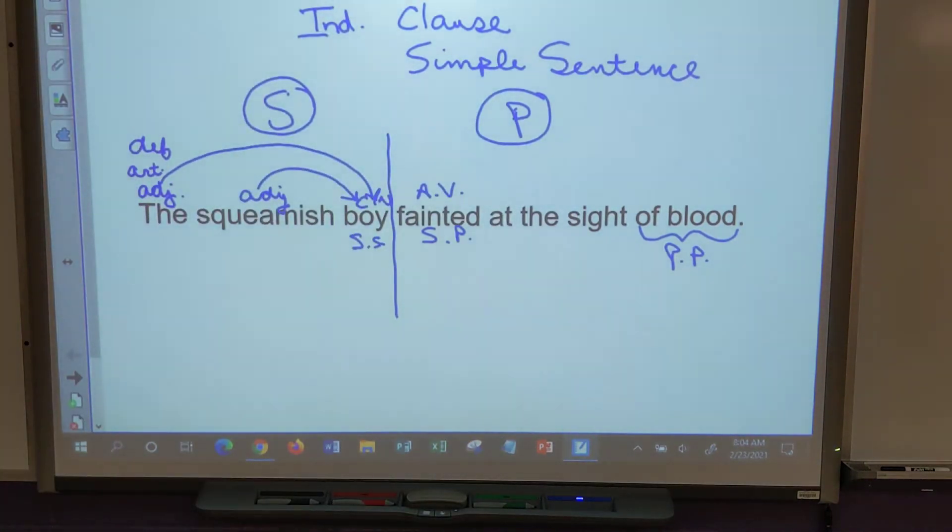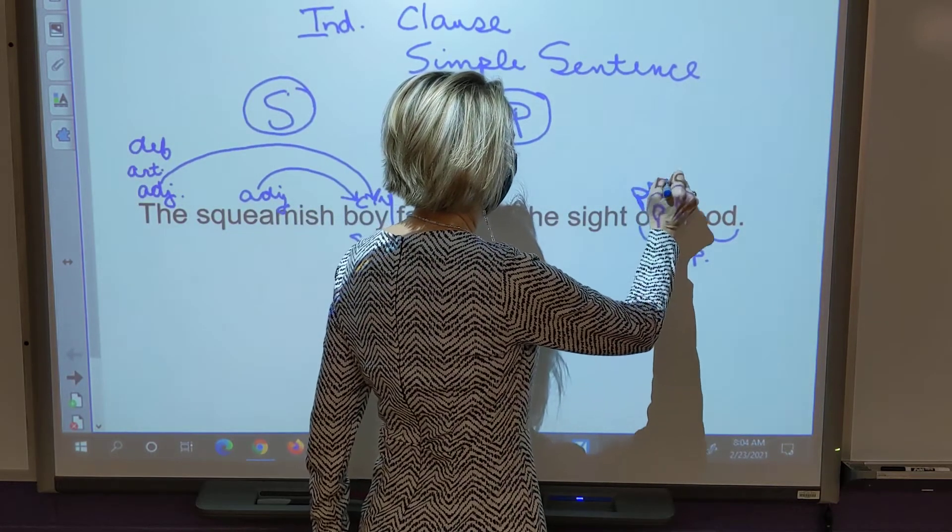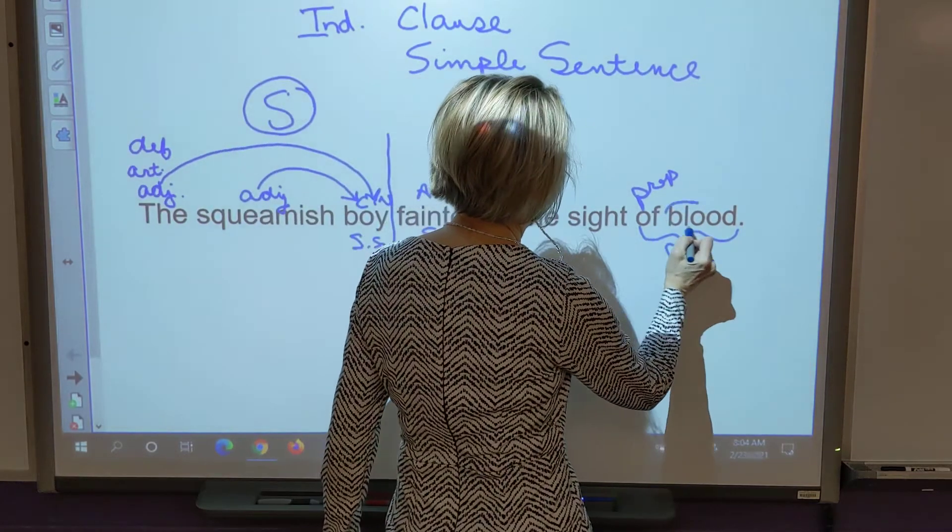Clara? Of is the preposition in the phrase of blood. We already got of blood, but yes. Of is the preposition. Ashley? Blood is the object of the preposition. Very good.